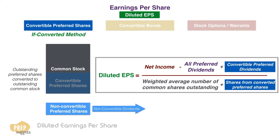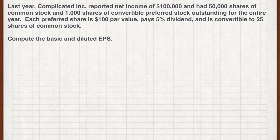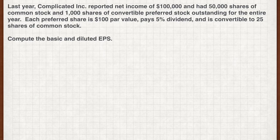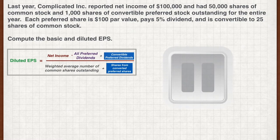The formula for a company's diluted EPS will look like this if the only dilutive securities outstanding are convertible preferred shares. Let's apply this: last year, Complicated Inc. reported net income of $100,000 and had 50,000 shares of common stock and 1,000 shares of convertible preferred stock outstanding for the entire year. Each preferred share is $100 par value, pays a 5% dividend, and is convertible to 25 shares of common stock. Compute the basic and diluted EPS.